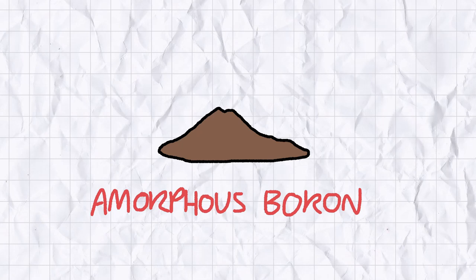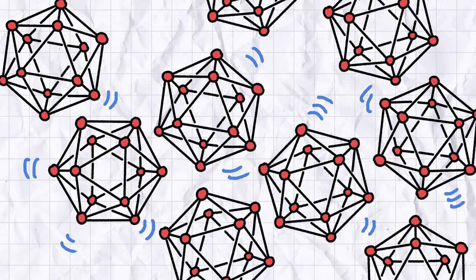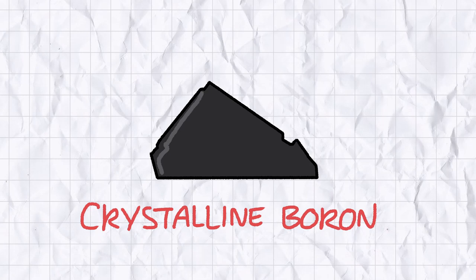One of boron's most common allotropes is amorphous boron, which at standard conditions is a fine chestnut coloured powder. In this form, the boron atoms bond together in the shape of miniature icosahedrons, which is the fancy Greek name for the shape of a 20-sided dice. These icosahedrons are arranged seemingly randomly throughout the powder and are kept packed together by weak intermolecular forces.